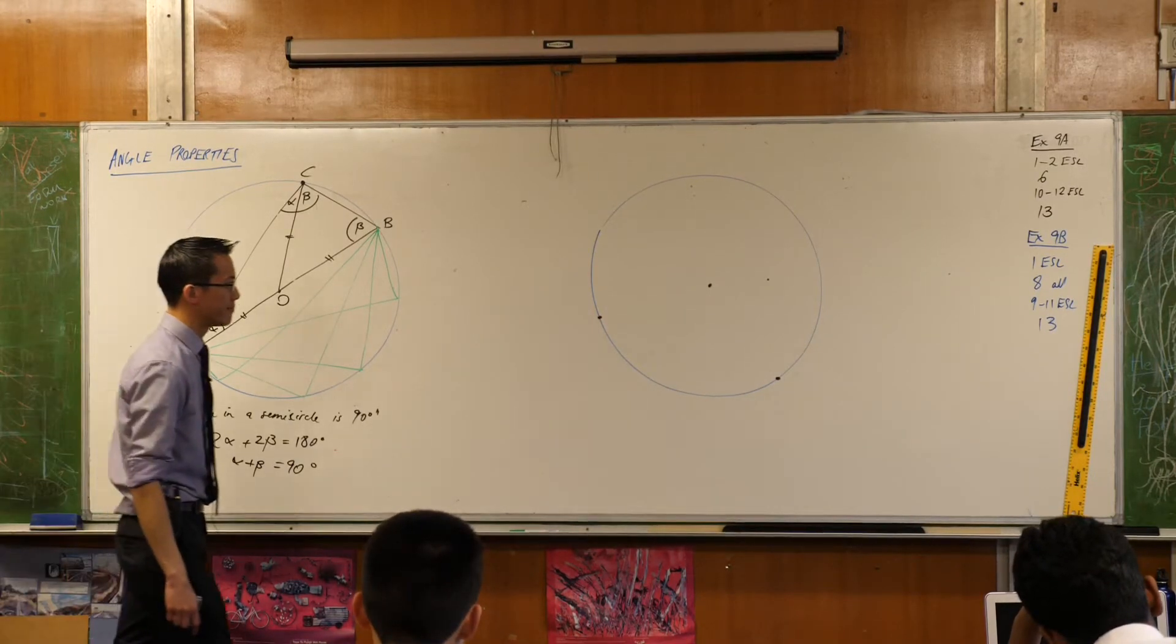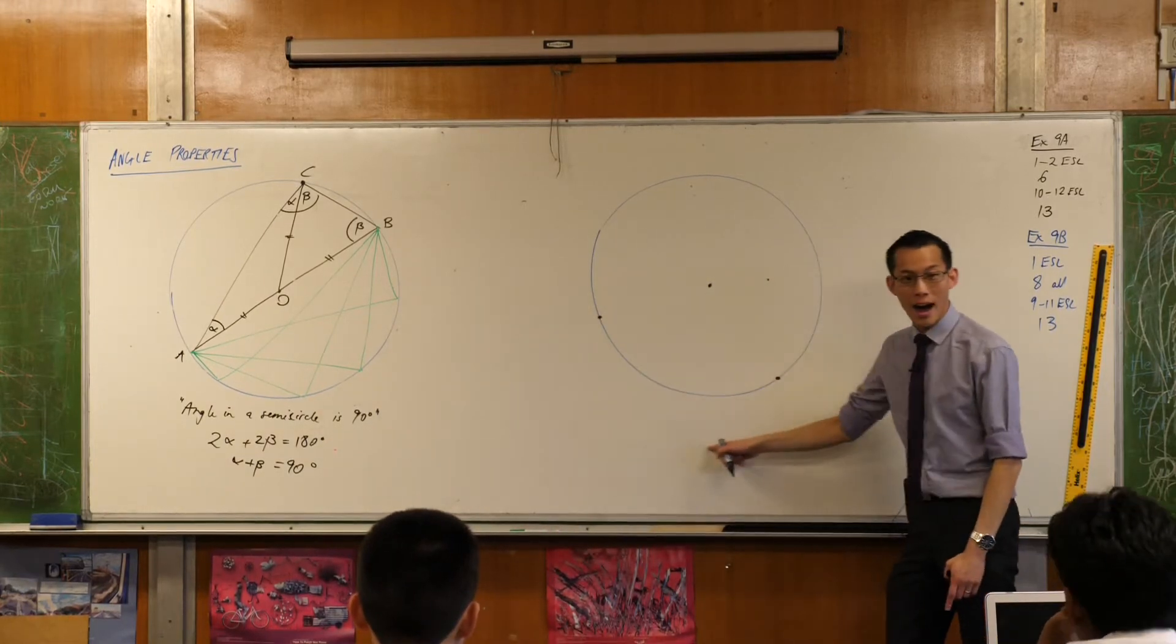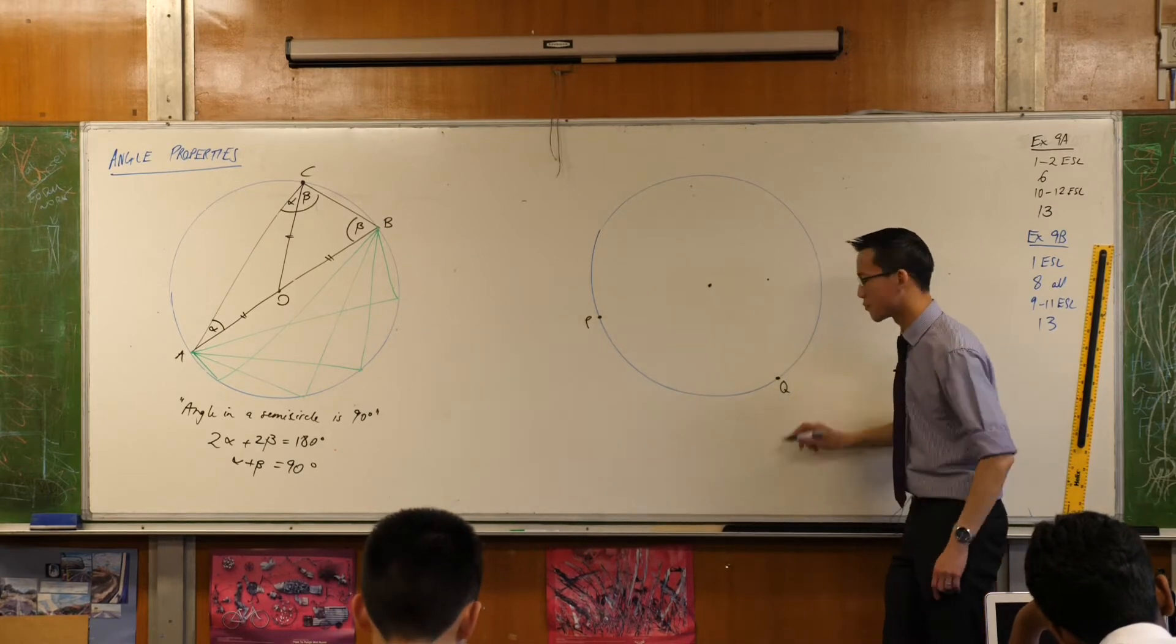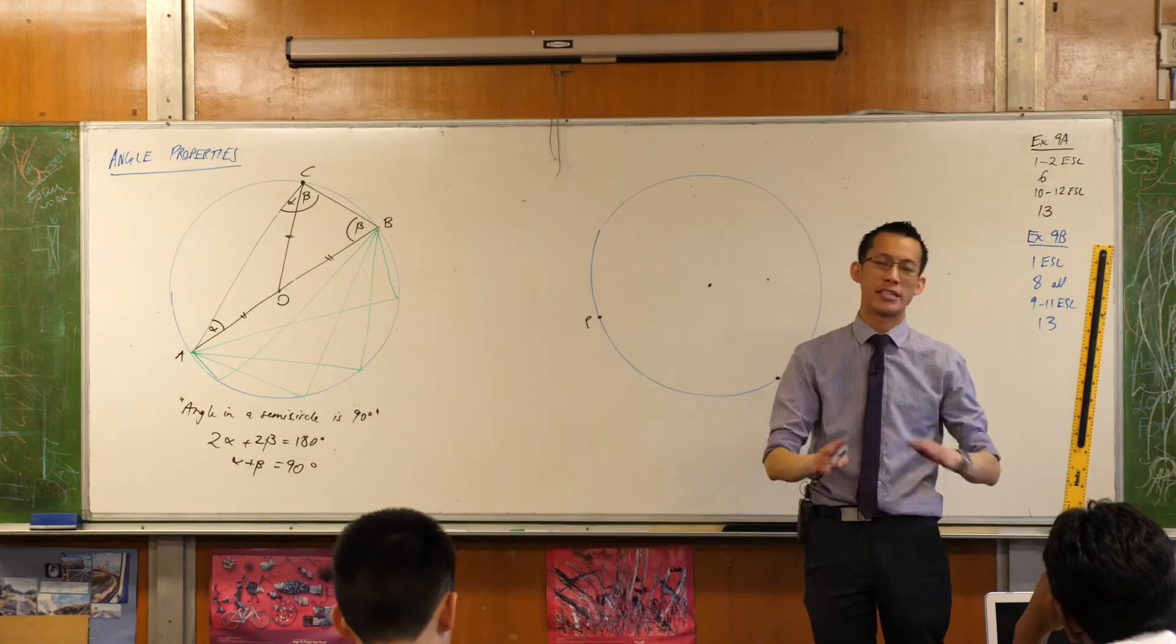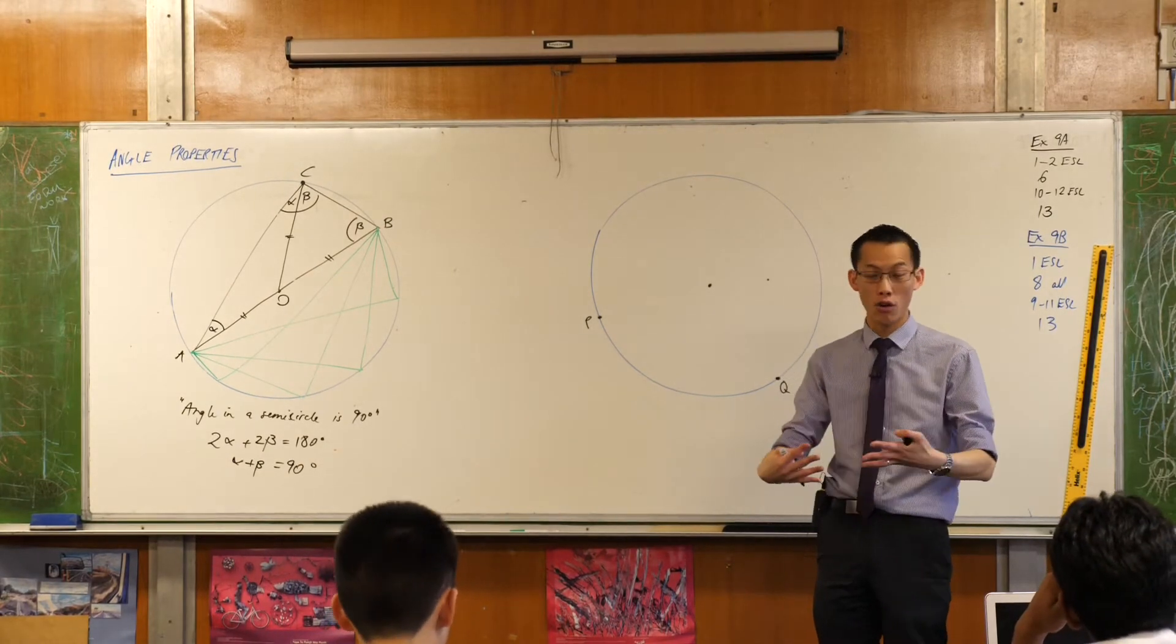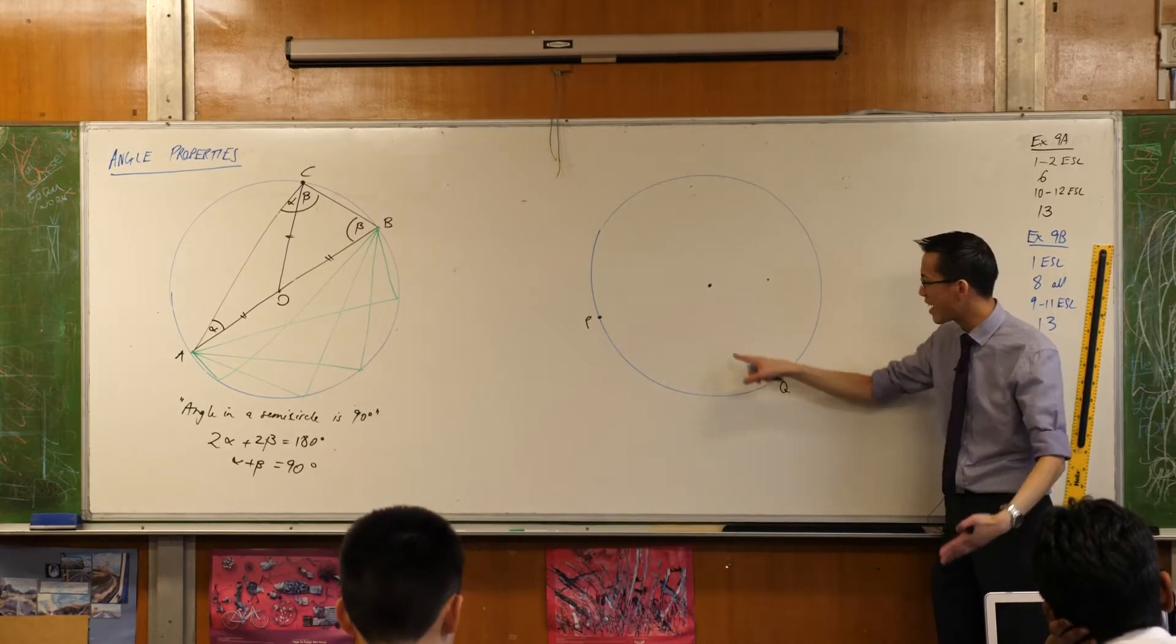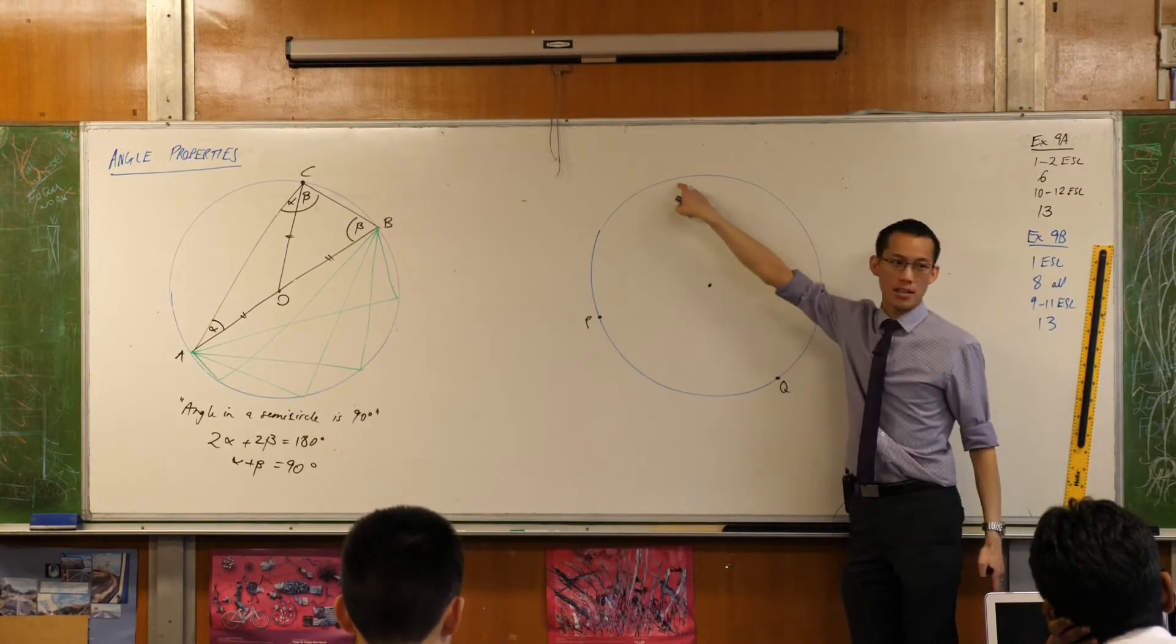Once you've done that, I'm going to use a fancy word here. I want you to use this arc along the bottom. Let's give it a name. Let's call it PQ. I want you to use arc PQ to subtend, which is just the fancy word for make or form. I want you to use arc PQ to subtend an angle at the center and also an angle at the circumference.